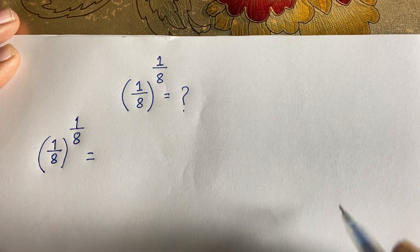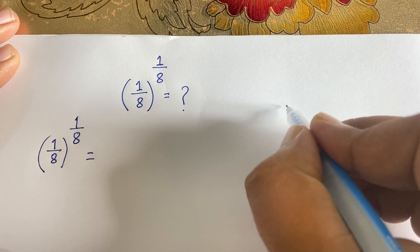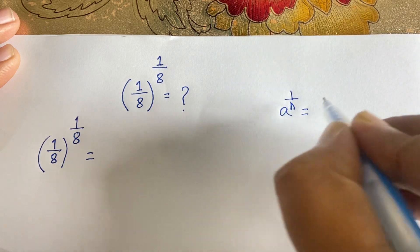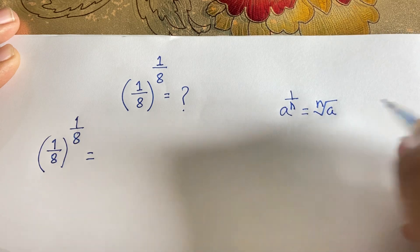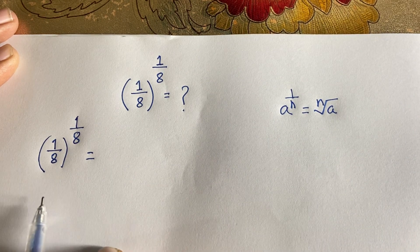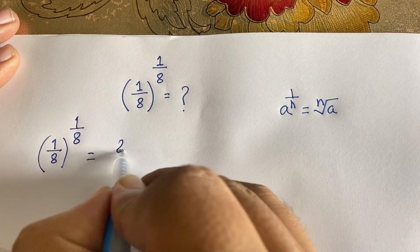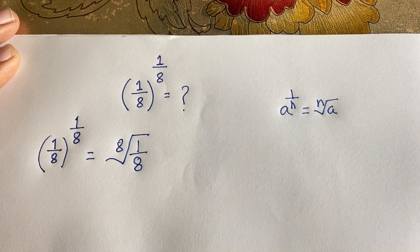We know the exponential rule: a to the power one over n equals the nth root of a. According to this rule, (1/8)^(1/8) becomes the 8th root of (1/8).